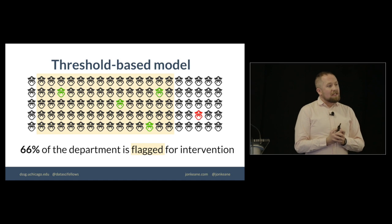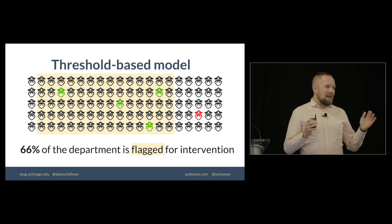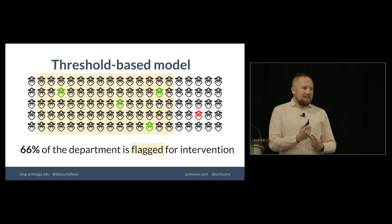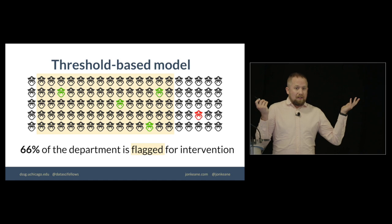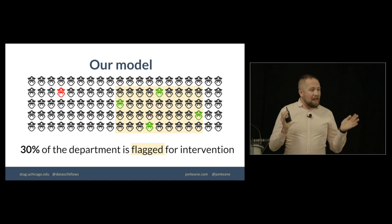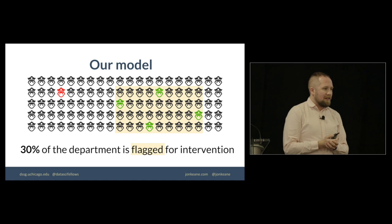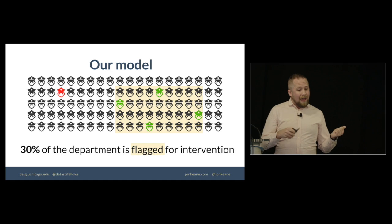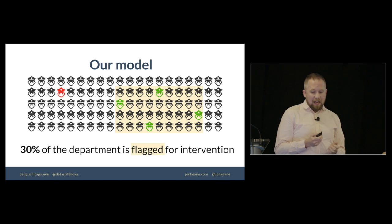So if we use that threshold-based model that I described before, we would actually have to flag 66% of the department in order to catch 80% of the officers who go on to have an adverse interaction. You can imagine this is not actually sustainable, either for training resources or people believing that the system does anything at all. Charlotte had a model like this, and they basically stopped using it after a few years because the officers were like, everyone gets flagged. What can I do? Our model at the end of the summer to identify that same 80% only flags 33% of the department. So that's a vast improvement over the current state of the art. And this is something that the Data Science for Social Good Organization has been working on since, and the rate for Charlotte now is down to about 17% to catch that same 80%.